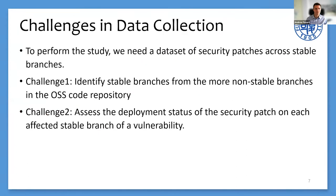To perform the study, we need to construct a dataset. However, there are two main challenges. First, it is required to identify stable branches from the many non-stable branches in the OSS code repository, and there is no automated method to do so. Second, it is required to assess the deployment status of security patches on each affected stable branch per vulnerability. Although there is a line of works that aim to identify bug-fixing commits or security patch commits, none of them can be directly applied to meet our requirements.